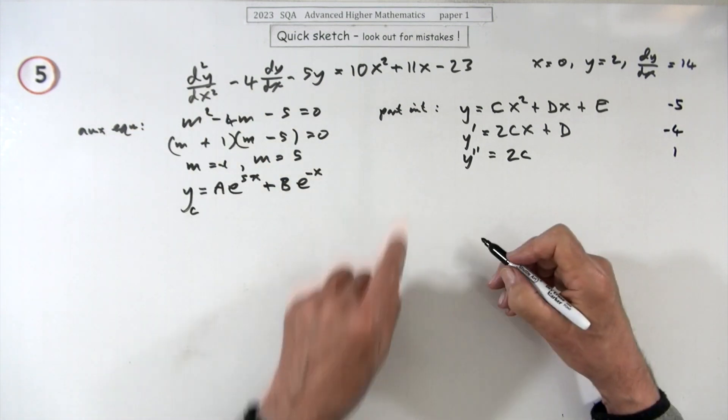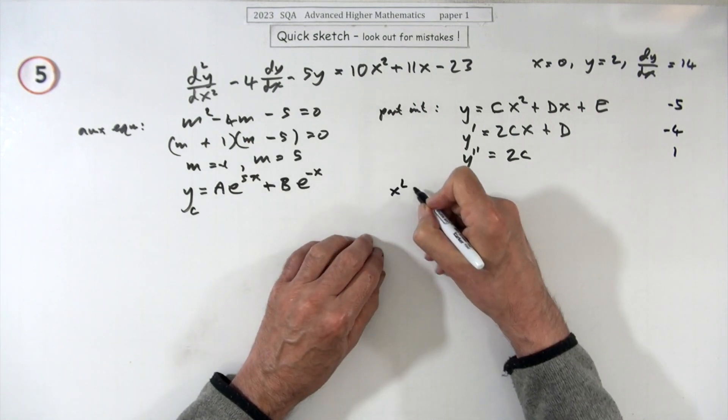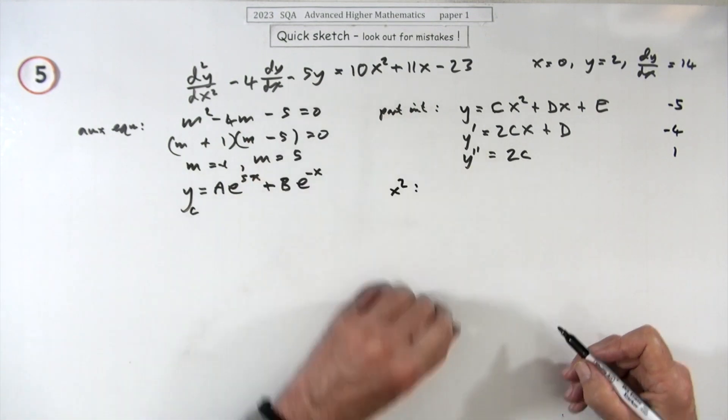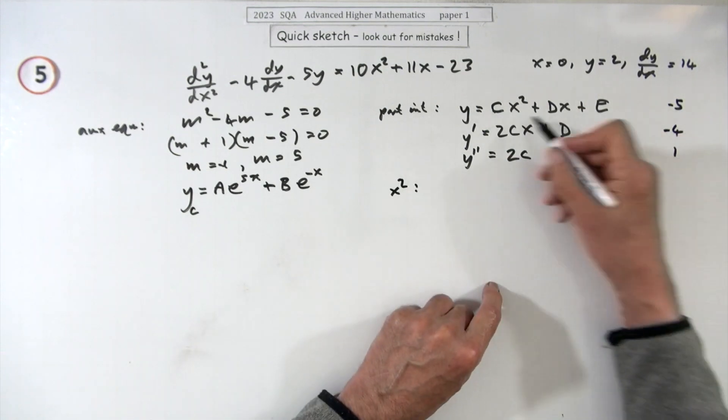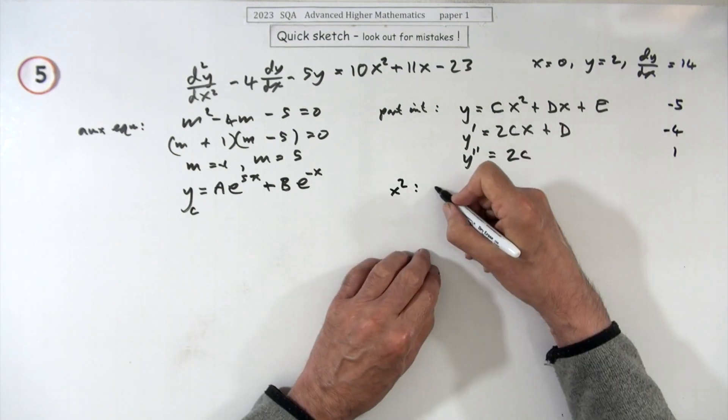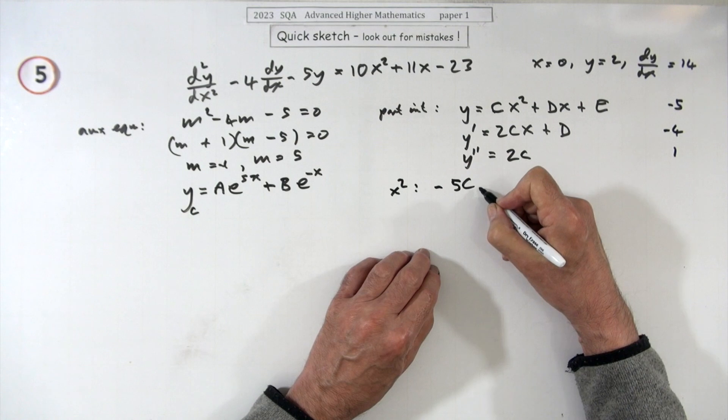Then I'll just construct, I'll just compare the terms here. Like the x squared term should come to 10. What have I got for x squared? I've got c here, I've got minus five of them, so minus 5c should equal 10. Well that means c is equal to negative 2.